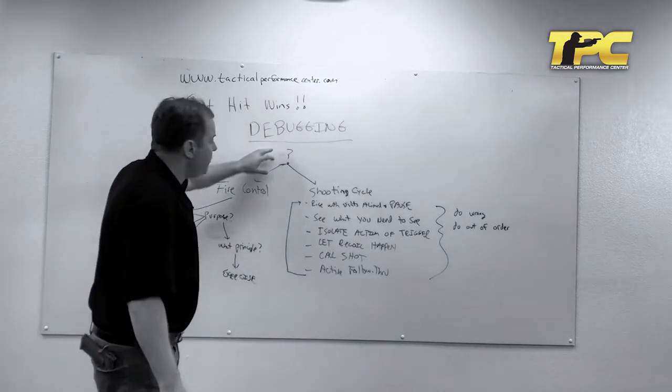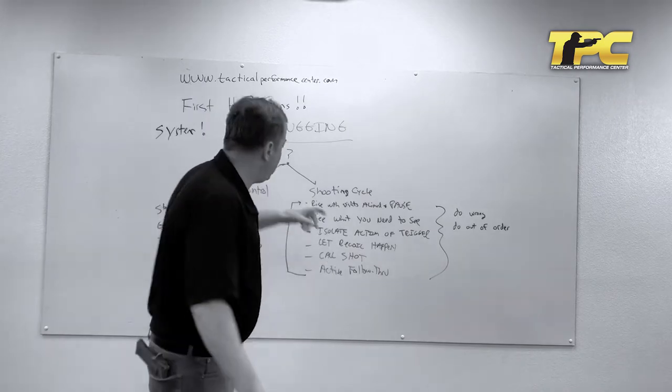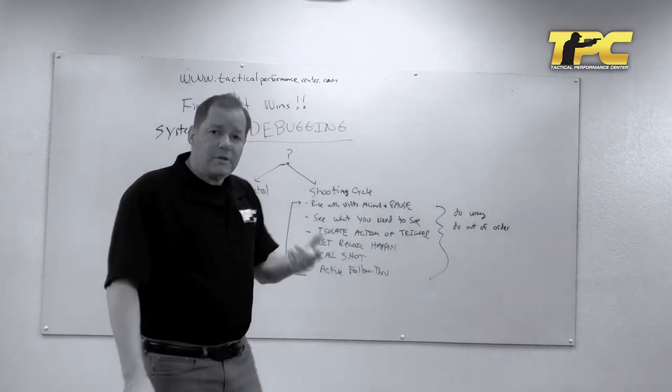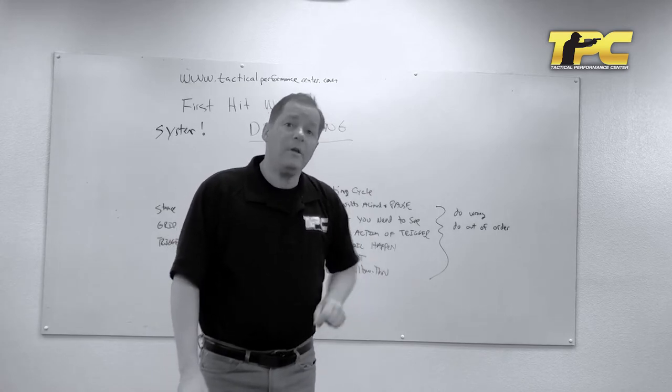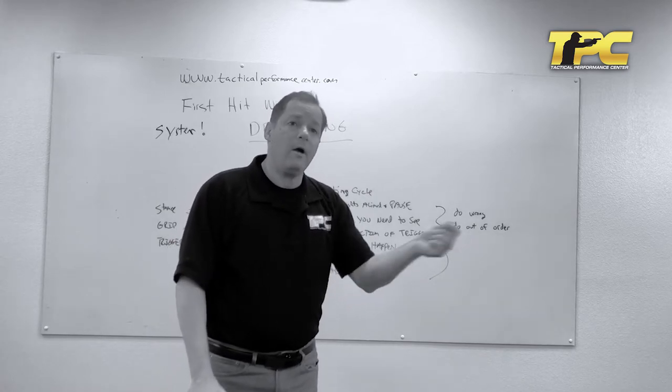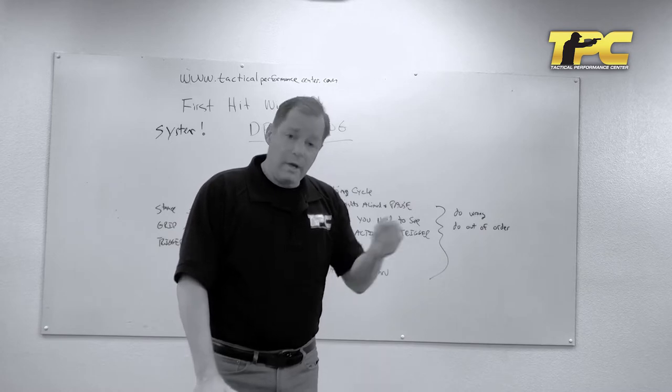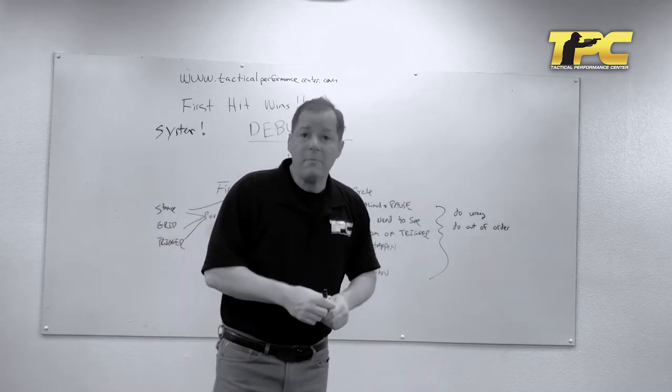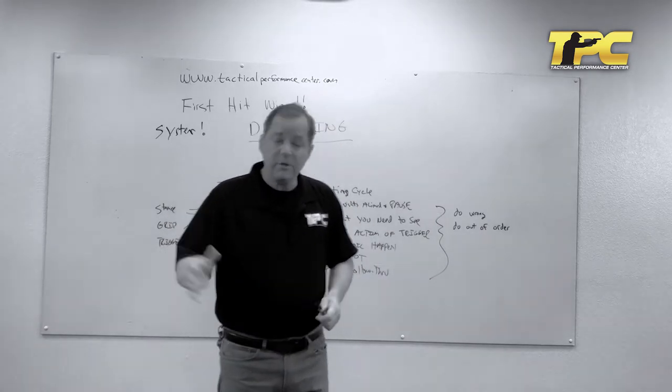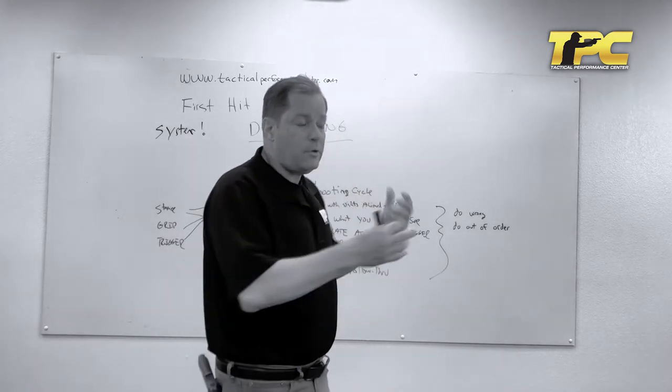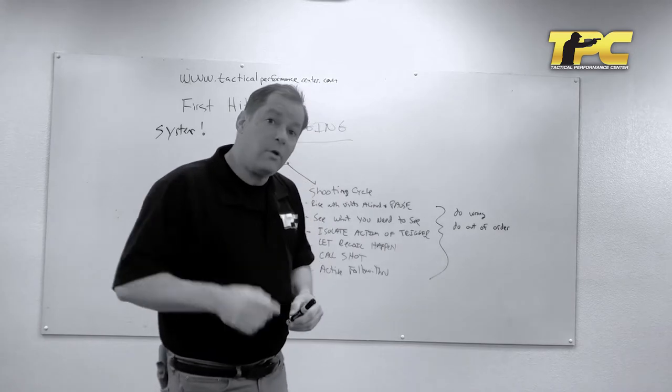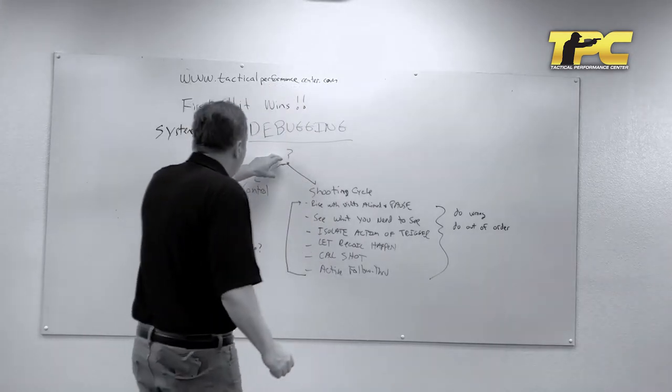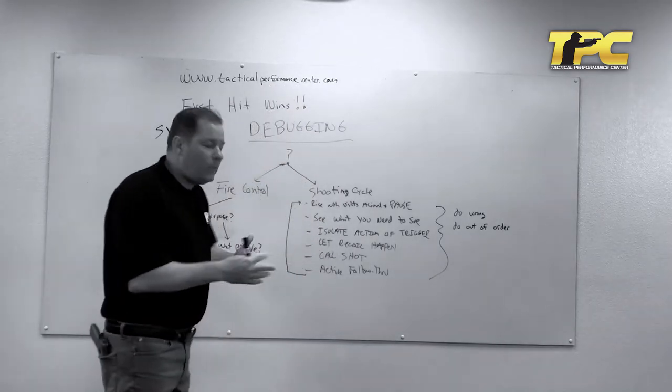So debugging using the reactive shooting system. First thing you do is you start with a question: What's happening with my process that's leading to the outcome? We don't start with the outcome and blame the outcome. The hole is in the wrong spot, there isn't a hole and missed the target, I'm shooting slow, shooting late. Whatever the issue is, it's going to be in the process, so look there.